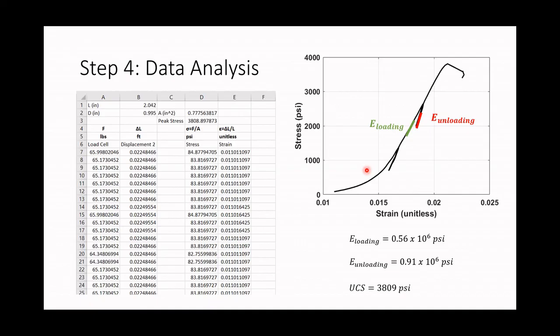Finally, we can choose the peak stress — the point at which the rock is broken — as our UCS. Now we have our three parameters: Young Modulus during loading, Young Modulus during unloading, and the UCS.